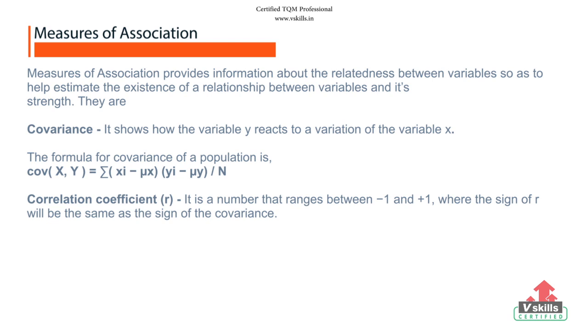Some of the commonly used measures are covariance. Covariance is a measure of the joint variability of two random variables. It shows how the variable y reacts to the variation of the variable x.